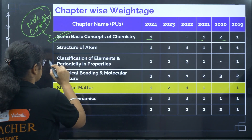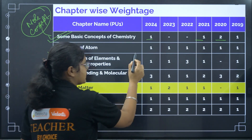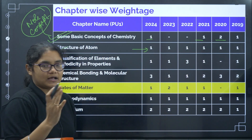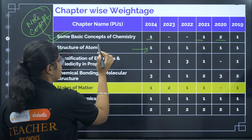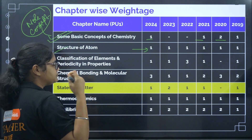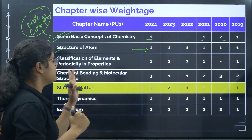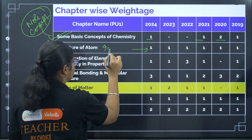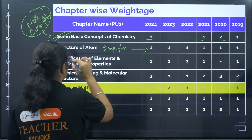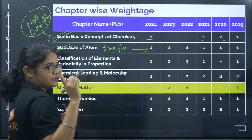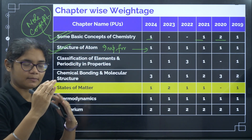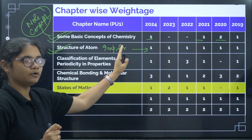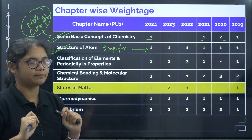Coming to the second chapter, Structure of Atom — only about one question per year in the last six years, but very easy to score. This chapter requires some calculation and revision of important formulas. If you revise seven to eight formulas from this chapter, you can get good marks here as well.